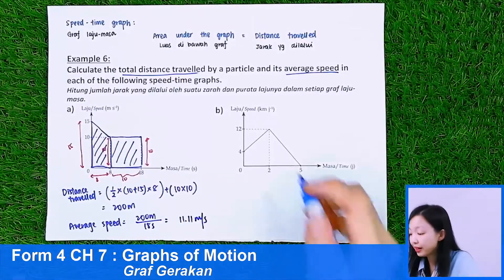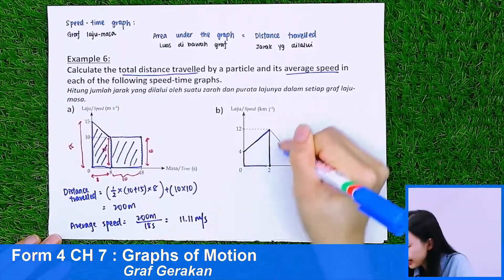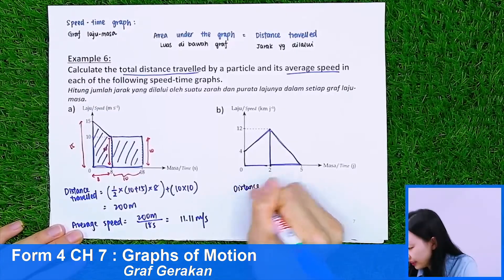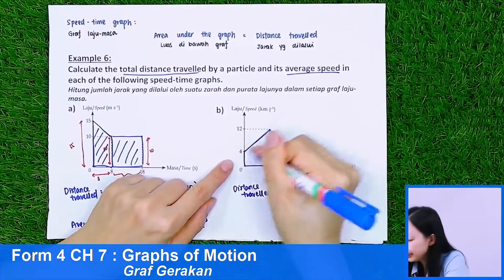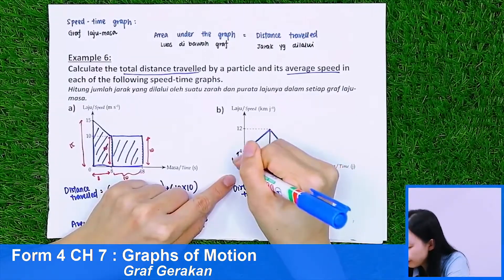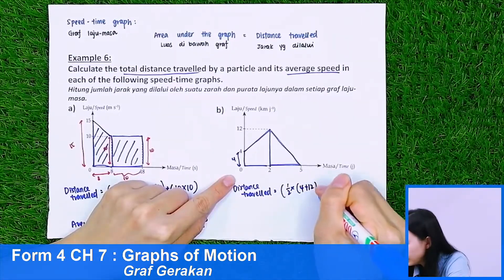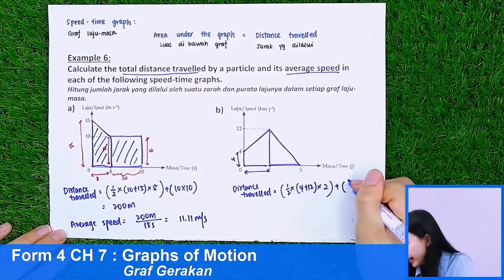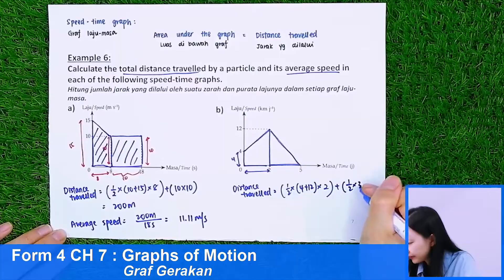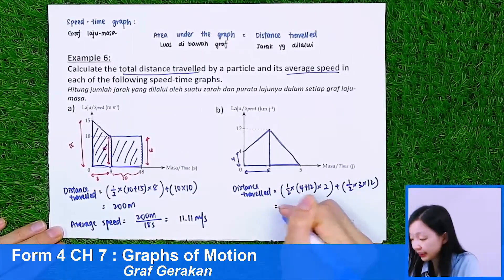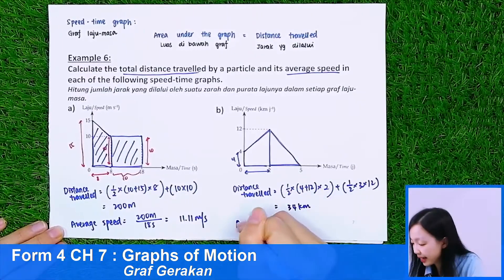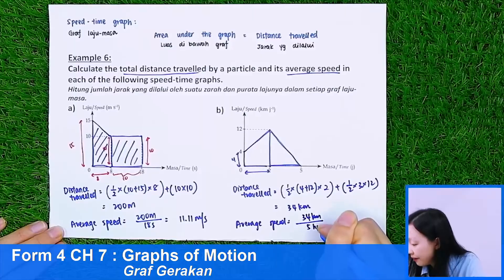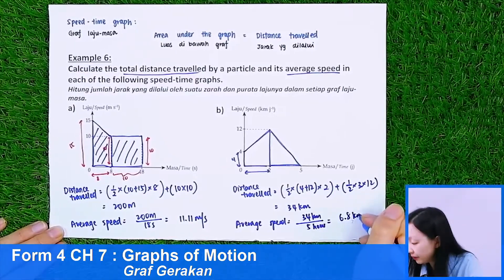For Part B, I calculate the trapezium and triangle. Distance equals 1/2 times (4 plus 12) times 2 for the trapezium, plus 1/2 times 3 times 12 for the triangle. Total distance equals 34 kilometers. Average speed equals 34 km over 5 hours, giving 6.8 kilometers per hour.